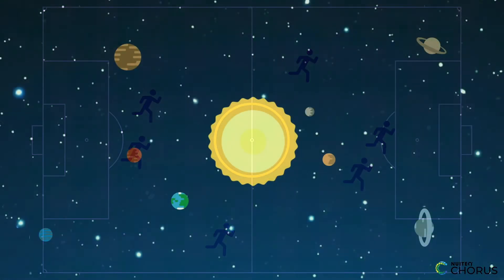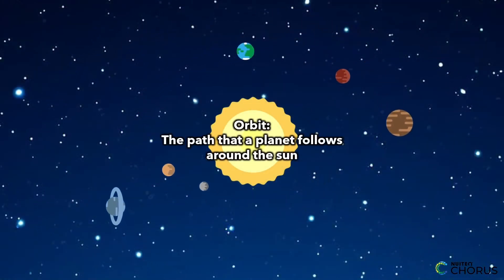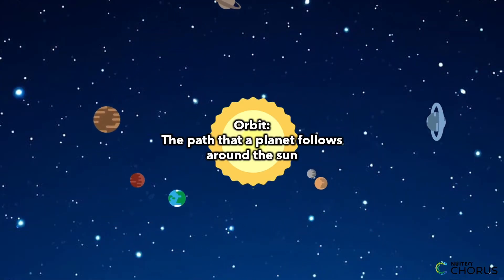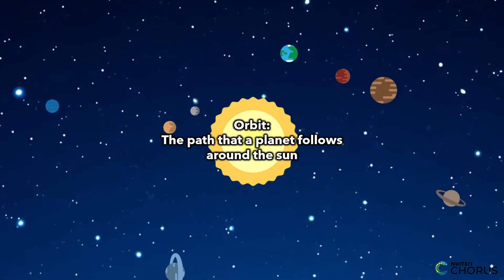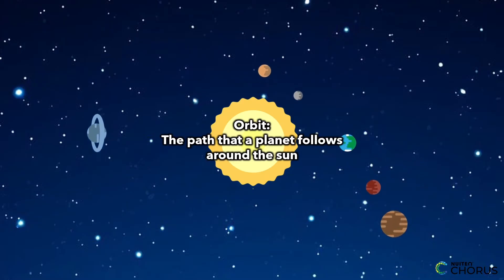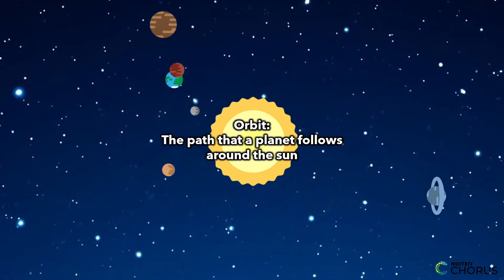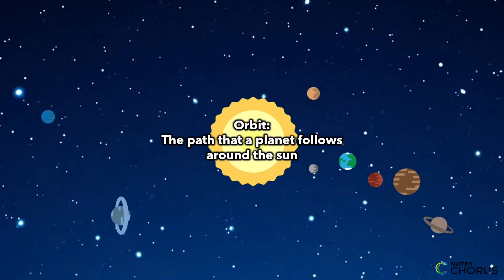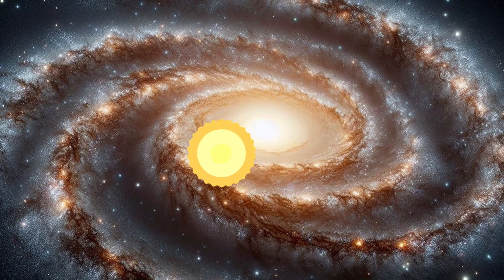Just like the players have to run in a certain pattern to stay on the field, the planets have to follow certain paths called orbits to stay in the solar system. And just like the players have to run at a certain speed to stay in the game, the planets have to move at a certain speed to stay in orbit.